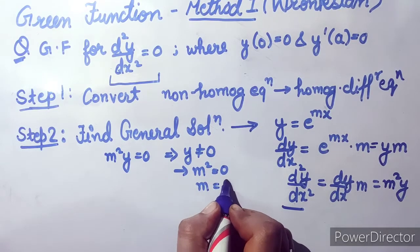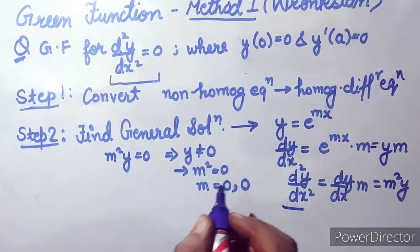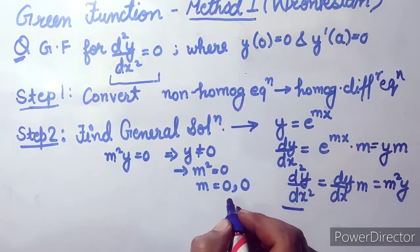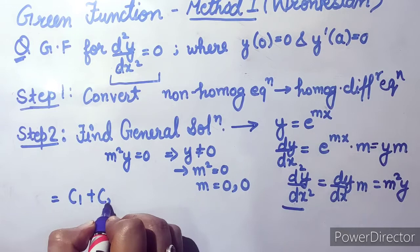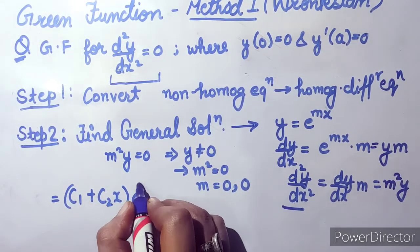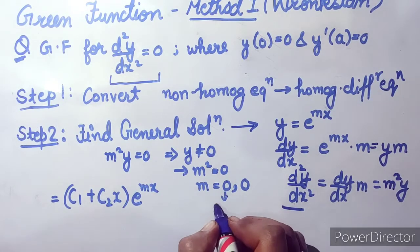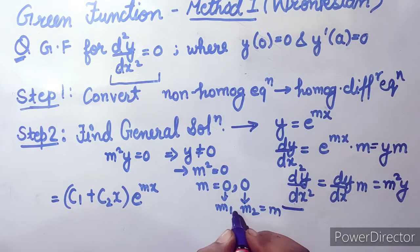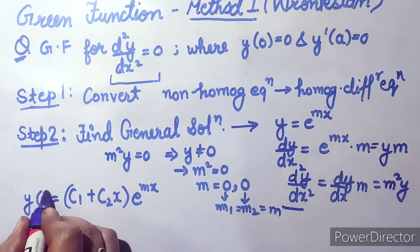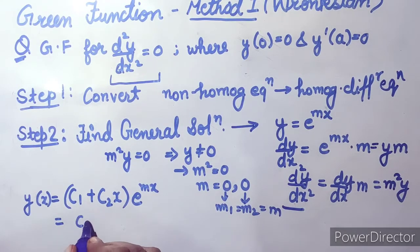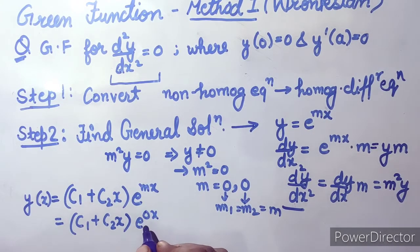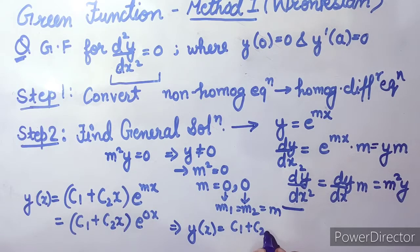Since m² = 0, our two roots are equal: m₁ = m₂ = 0. For this case of equal roots, the complementary function (general solution) is given by (c1 + c2·x)·e^(mx). Since m = 0, e^(0·x) = 1, so the general solution simplifies to y = c1 + c2·x.